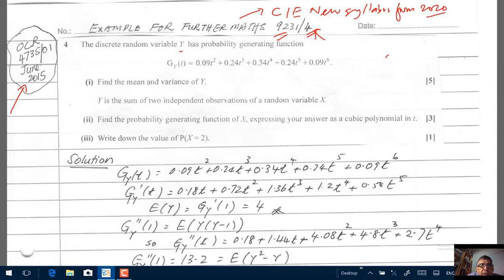The discrete random variable Y has probability generating function, pgf, g_y(t) = 0.09t² + 0.24t³ all the way up to 0.09t⁶. So that's g_y(t). You are asked to find in part 1 the mean and variance of Y. Now the rest of the question we will read when we are ready to deal with it.